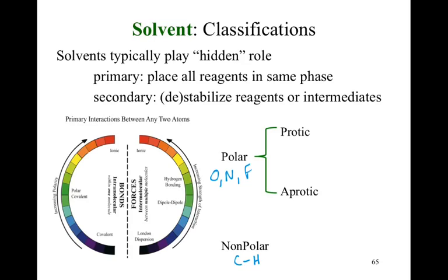Why? Because those are our electronegative elements, and those electronegative elements give us polar covalent bonds, which is why we call them polar solvents. When we shift to protic versus aprotic — protic is really just a fancy way of saying it is a hydrogen bonding solvent. It must be a hydrogen bond donor to have that ability to be a protic solvent.